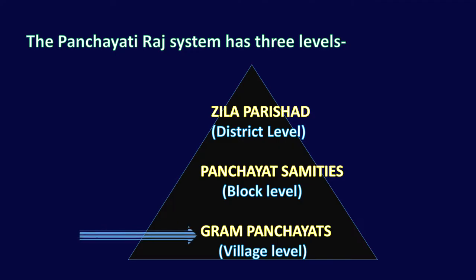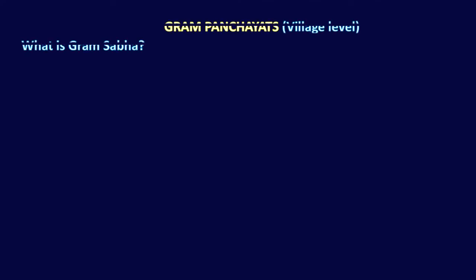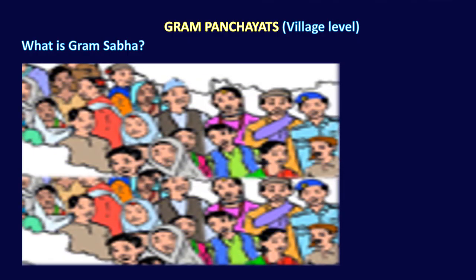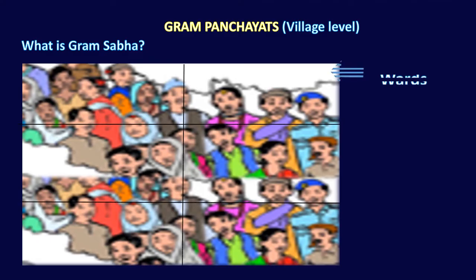First we will discuss Gram Panchayat at village level, but before that we should know what is Gram Sabha. Gram Sabha is the meeting of all the people of a village who can vote. All the people of a village who are eligible to vote are together called a Gram Sabha — they are the members of the Gram Sabha.